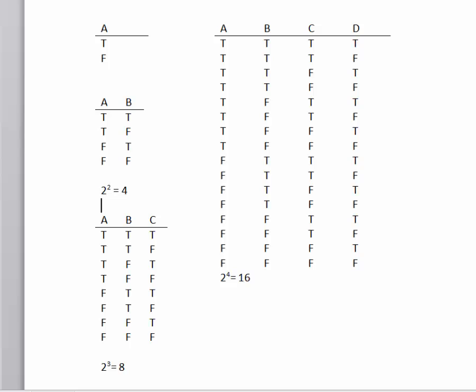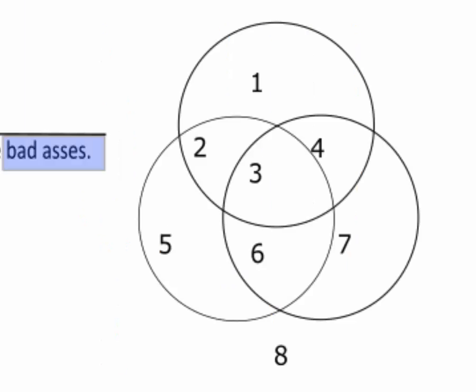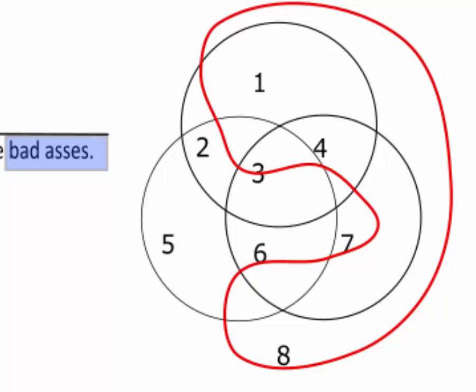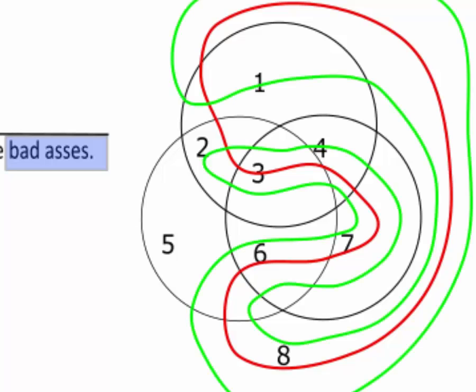If we wanted a diagram for four sets, we would need 16 regions, then 32, and so on. It can be done, but eventually the shapes can't be circles. They have to snake around in these weird ways to divide up the regions. They also get pretty cluttered. It would be difficult to use a Venn diagram for four or five sets.